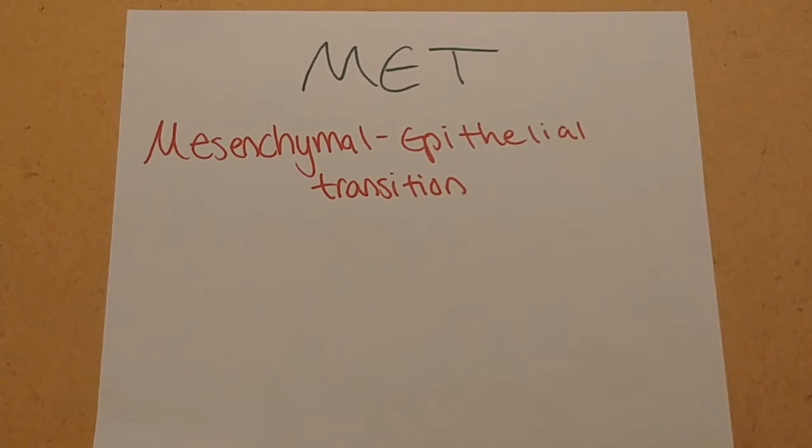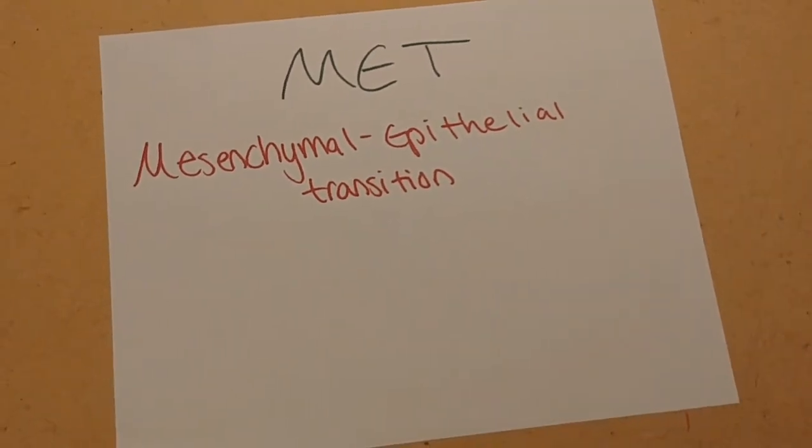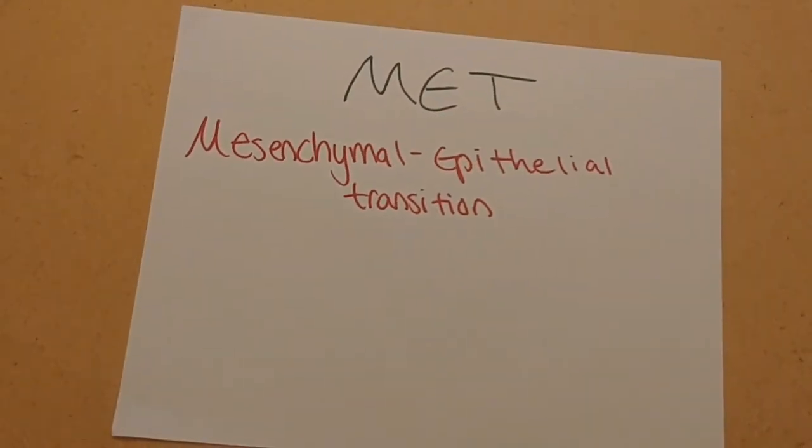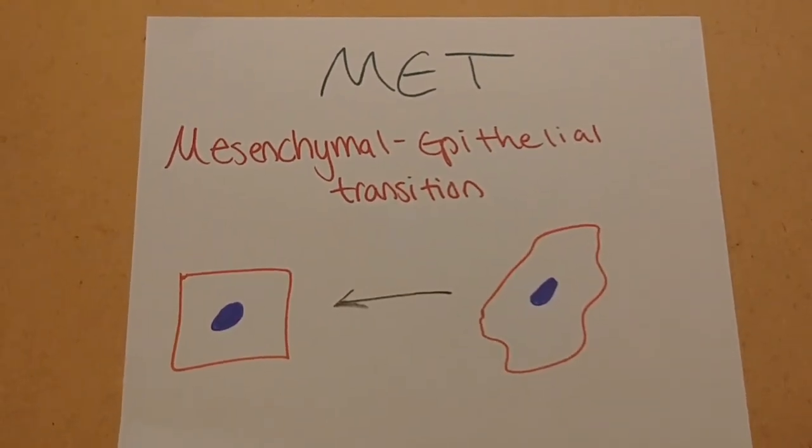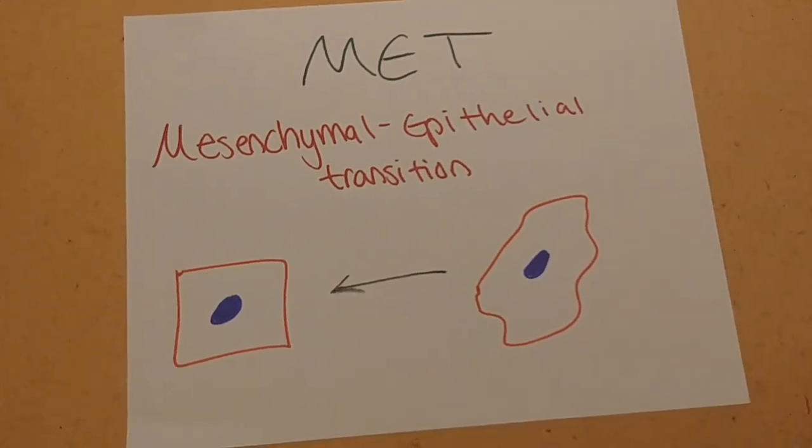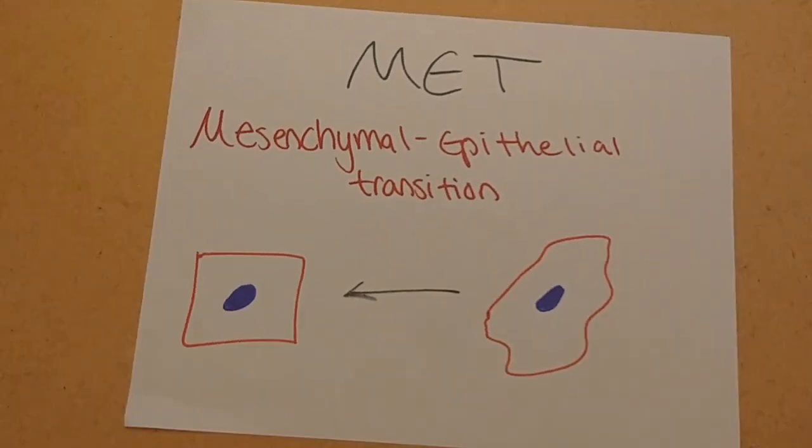This is thought to occur during the colonization of secondary tumor cells in their new locations, as these cells exhibit many similarities to the primary tumor cells. While the migrating cells themselves may be mesenchymal, it is possible that to successfully colonize secondary tumor sites, the cells must have an epithelial phenotype.